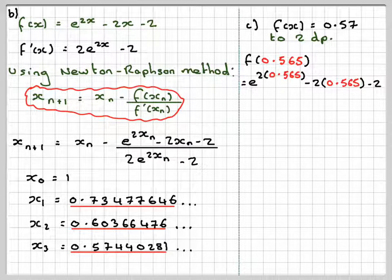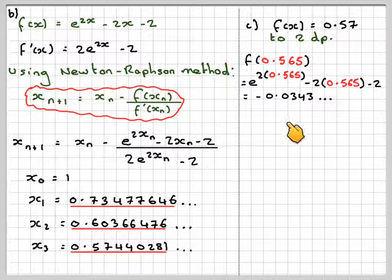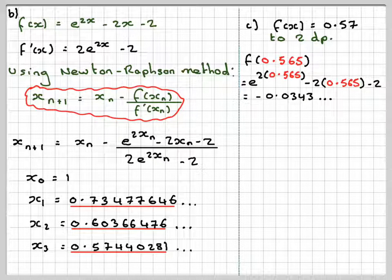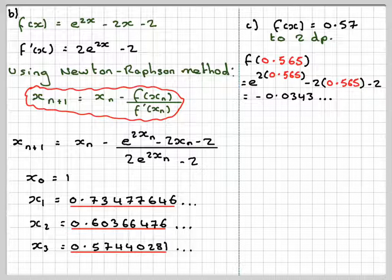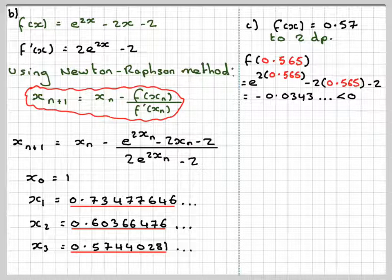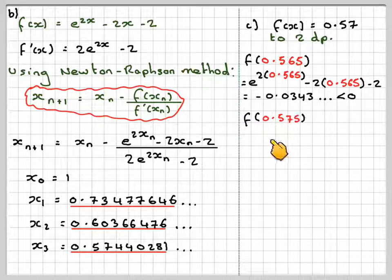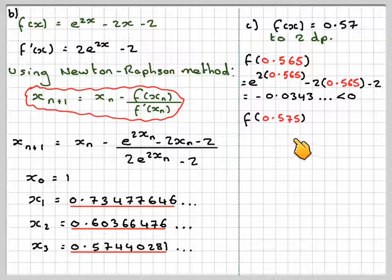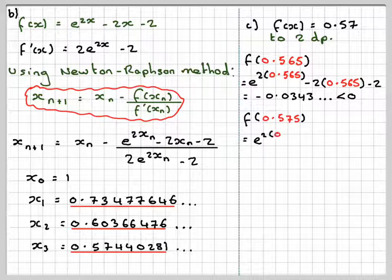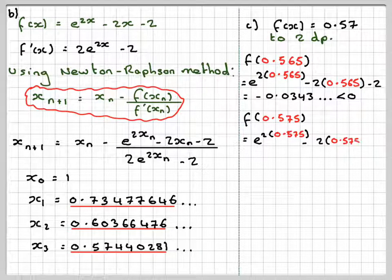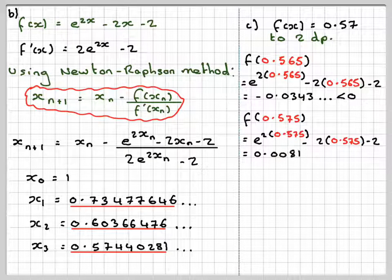And we get that here, it is minus 0.343, so it's very similar to what we did at the beginning. And that's less than 0, it's negative. And then take the upper bound, which is 0.575, and put it into our function here. And that comes out to be positive.